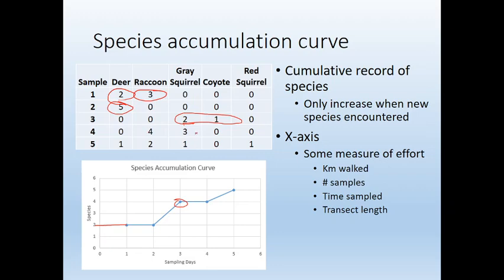The fourth day, we don't see any new species. The fifth day, we finally get the red squirrel, so we get one more species and the count goes up. When we make a species accumulation curve, in this case we're using sampling days — but it could be number of net sweeps, number of transects, quadrats you put down, or the amount of time you're watching a certain plot of land. It's some measure of effort.